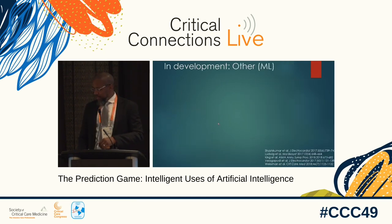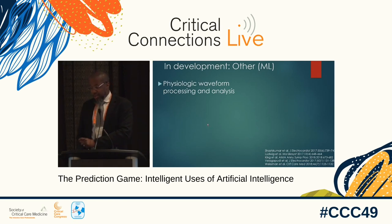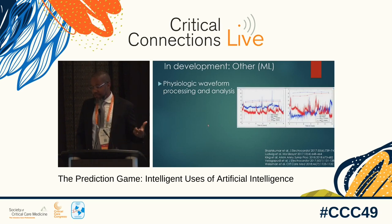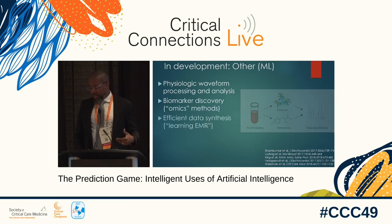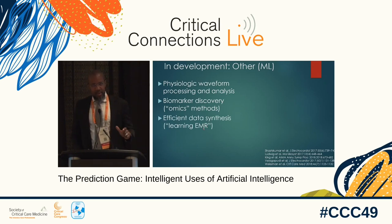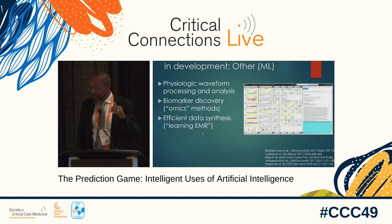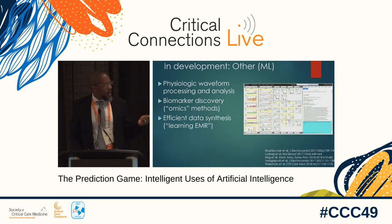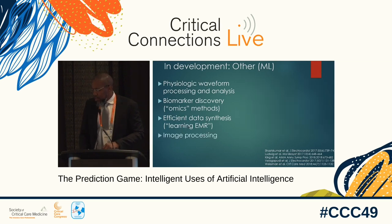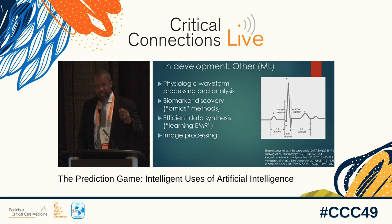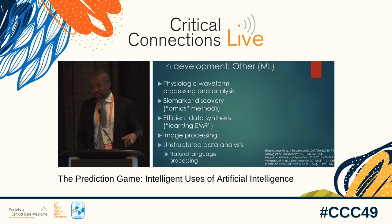Looking at other potential opportunities for machine learning: physiologic waveform processing and analysis is a hot topic many have covered elsewhere. There's biomarker discovery and omics methods. Efficient data synthesis, or learning from electronic medical records, is another area — models can identify what you're looking at in the EMR and send you back similar information, because it learns your practice patterns. Image processing is another area, looking at various metrics in the ECG and other waveforms. And then there's unstructured data analysis.